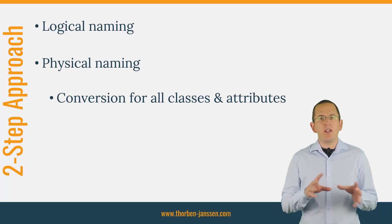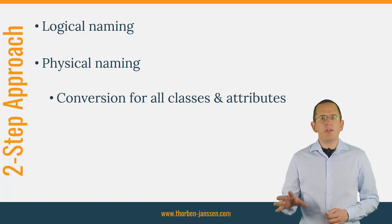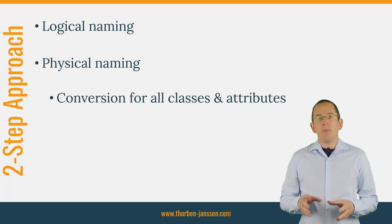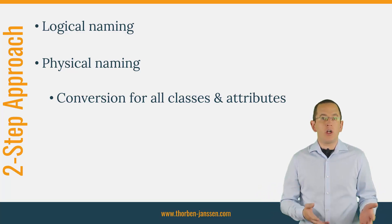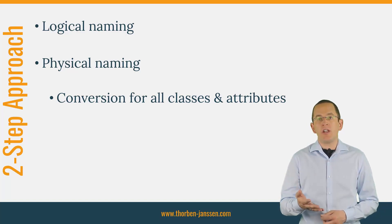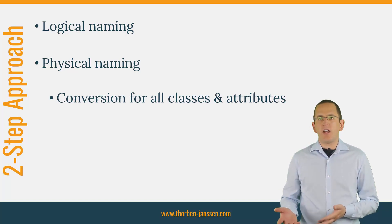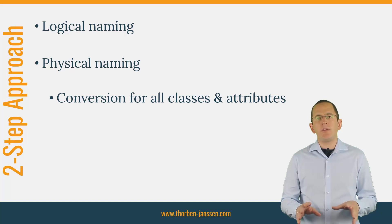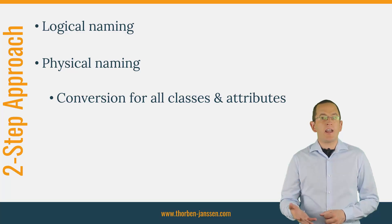So why does Hibernate differentiate between a logical and a physical naming strategy but the JPA specification doesn't? JPA's approach works, but Hibernate's approach provides more flexibility. By splitting the process into two steps, Hibernate allows you to implement a conversion that gets applied to all attributes and classes. If your naming conventions, for example, require you to add underscore_TBL to all table names, you can do that in your physical naming strategy. It then doesn't matter if you explicitly specify the table name in a @Table annotation or if you do it implicitly based on the entity name — in both cases, Hibernate will add _TBL to the end of your table name.